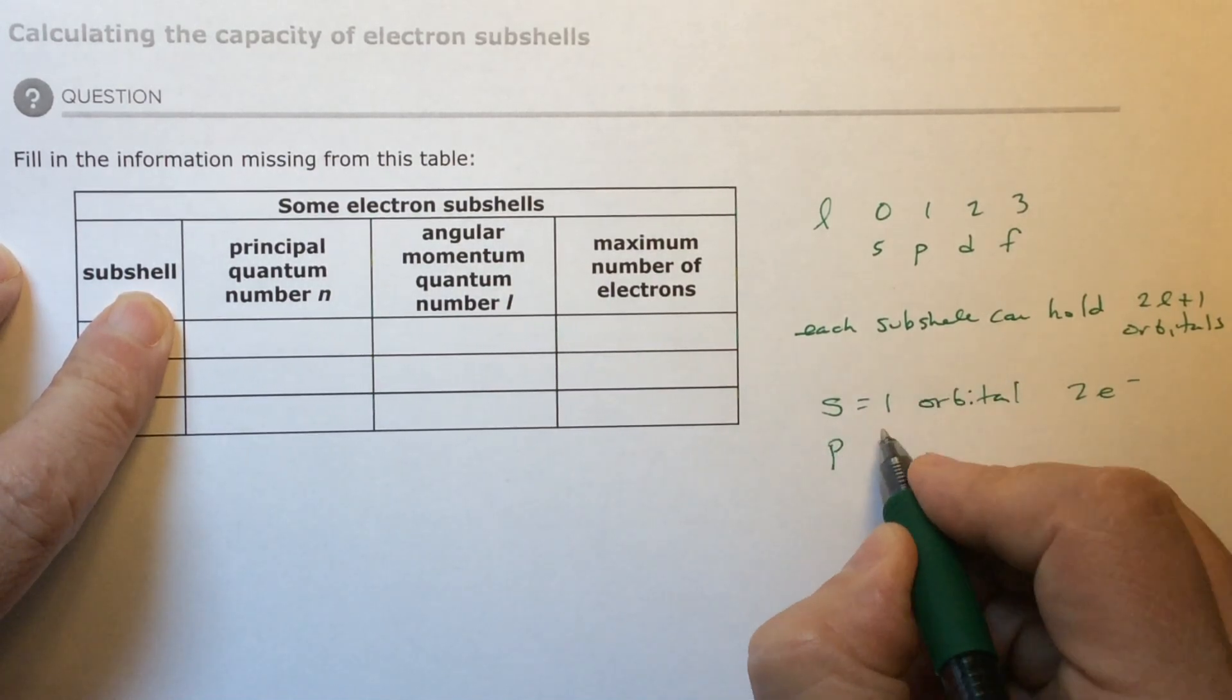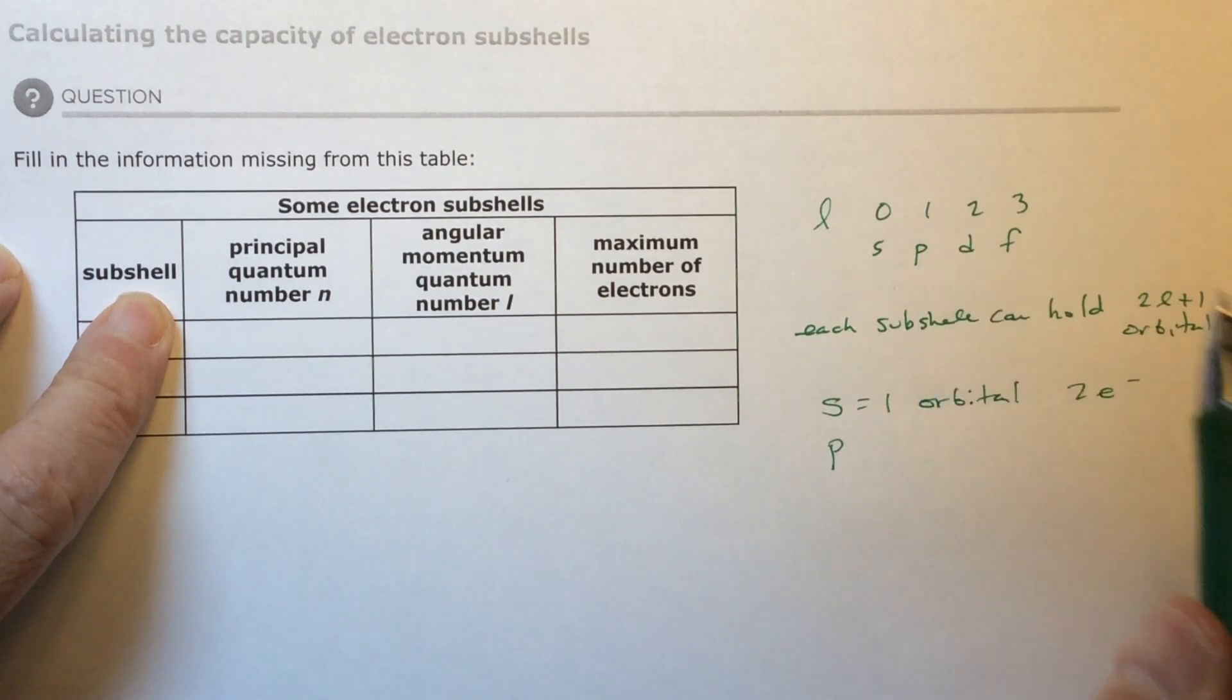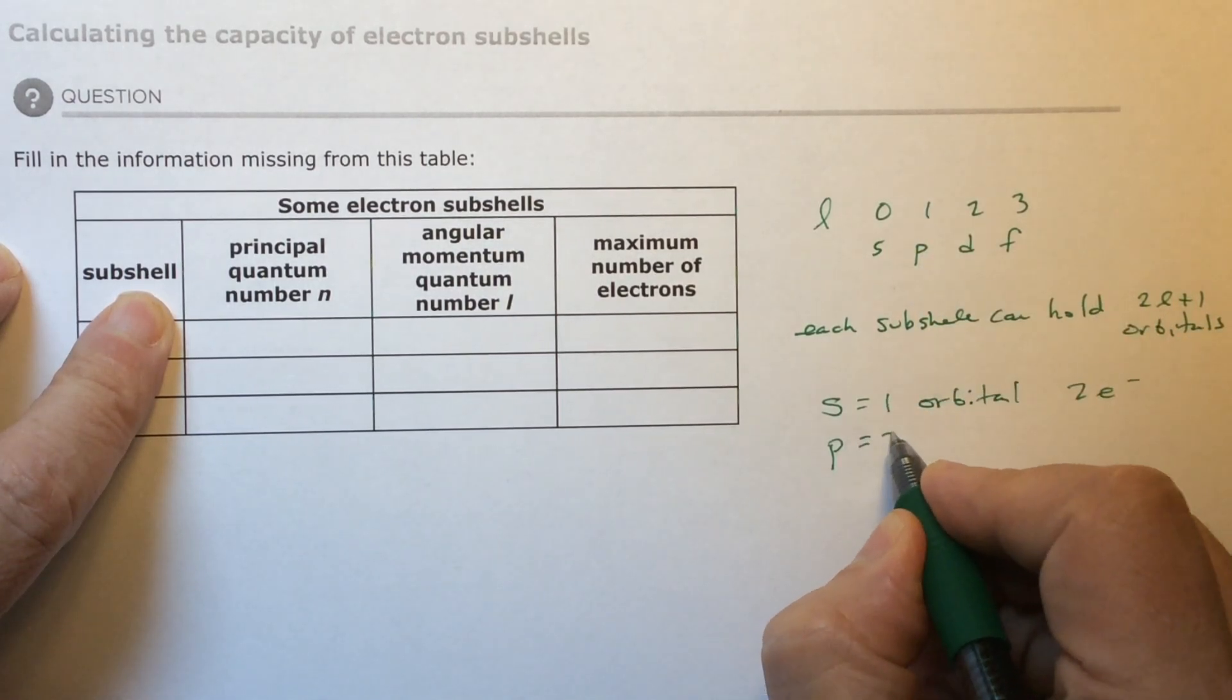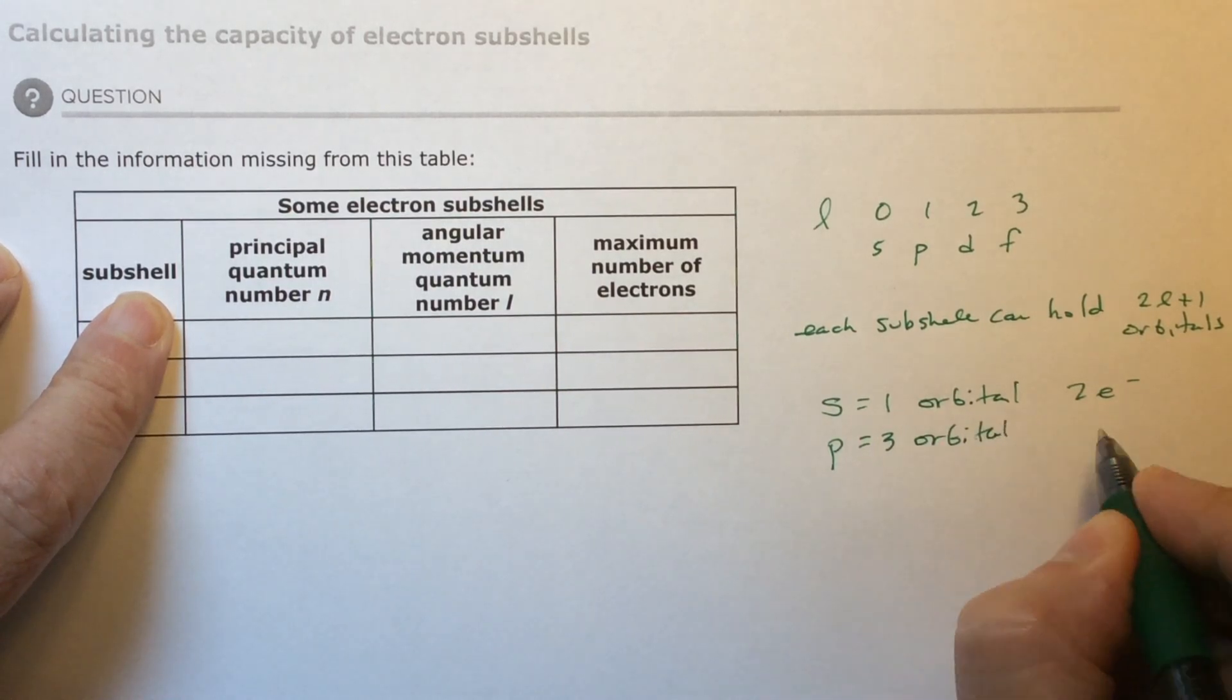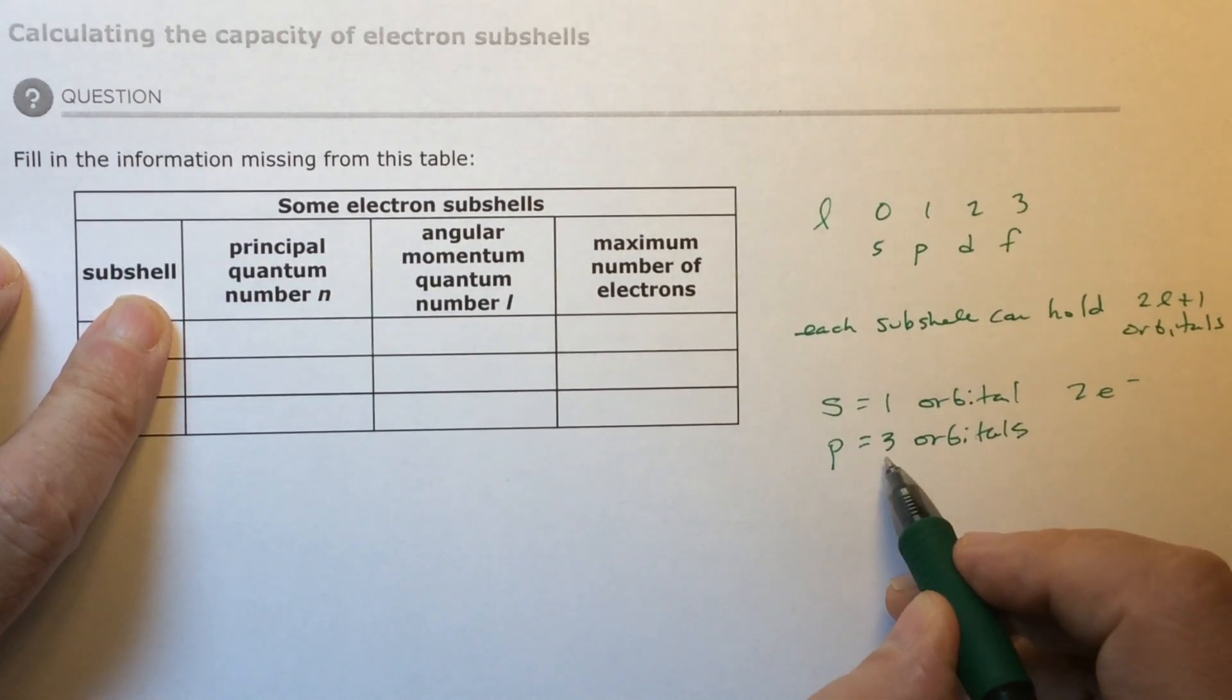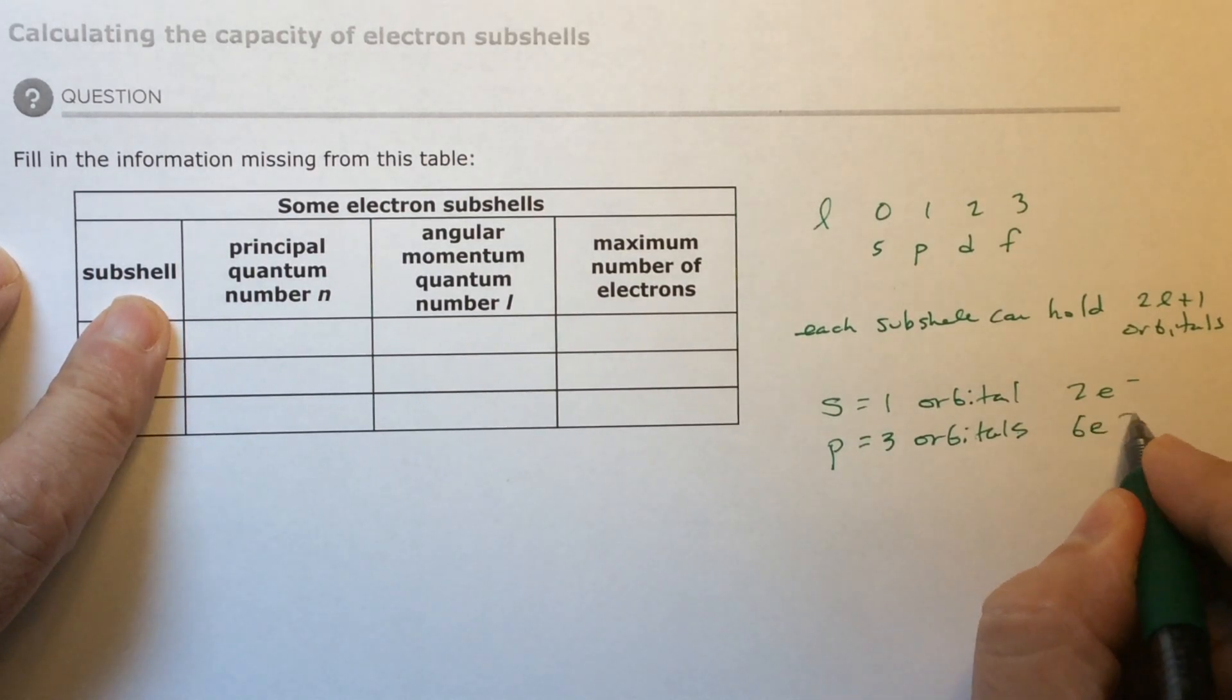The P, which is L equals one, is two times one is two plus one is three. Three orbitals, which is going to equal three times two is six electrons total.